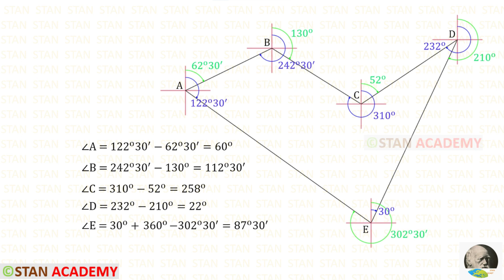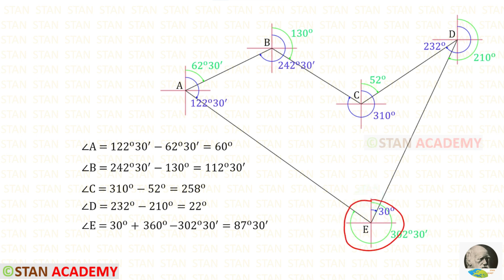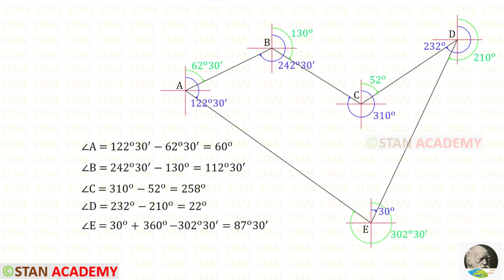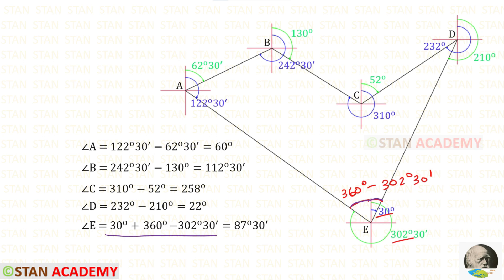For the interior angle at station E, we split the angle into two parts — right side and left side. The right side is 30 degrees. For the left side, we use 360 degrees minus 302 degrees 30 minutes. Adding the right side (30°) and the left side gives the interior angle at station E, which is 87 degrees 30 minutes. We have now found all of the interior angles.